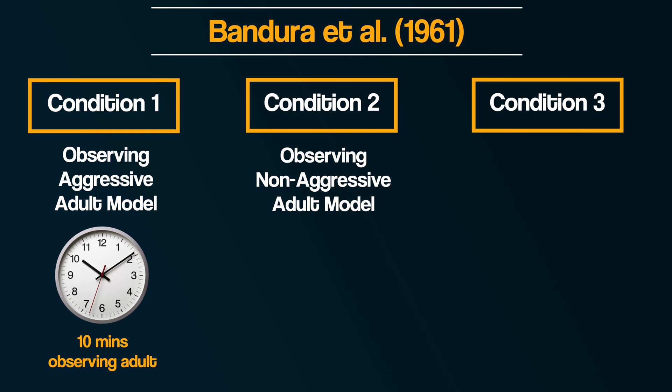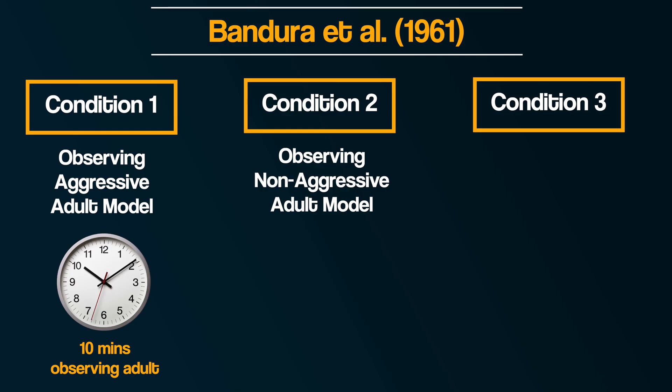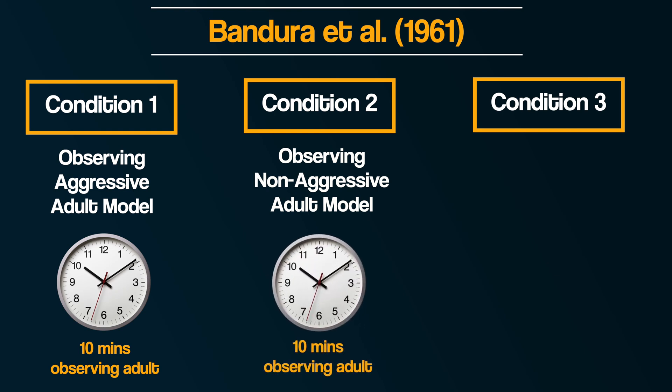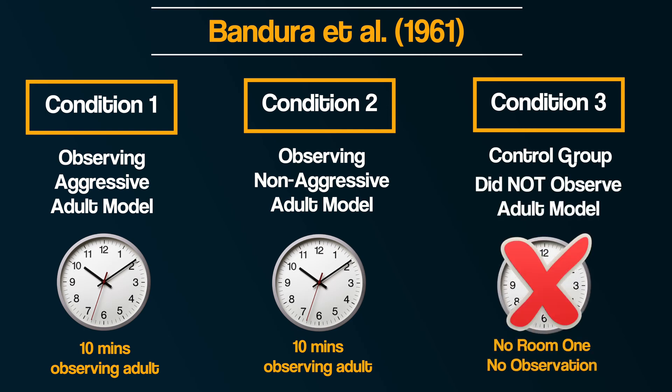Experimental Condition 2: observing non-aggressive adult models. In this condition, the adult played with the toys but demonstrated none of the aggressive behaviors from Condition 1. Once again, the adult behaved this way for 10 minutes. In Condition 3, there was a control group — no exposure to any model; they just went straight to the second room to play with the toys.